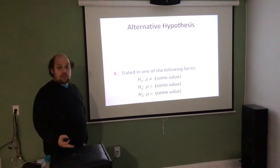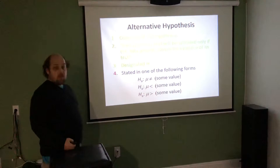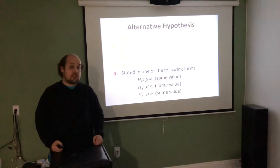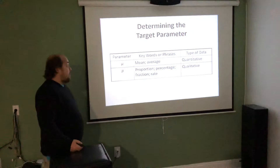Whenever we're stating the alternative hypothesis, we have three choices: 'not equal to' if we're not sure which direction we want to look and just want to disprove the null; 'less than' if we want to prove it's less than a certain value; or 'greater than' if we want to prove it's greater. What we choose depends on the research question and how the problem has been set up.